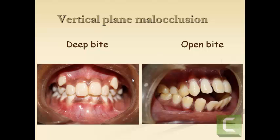Malocclusion may also be present in the vertical plane — that is, either a deep bite or an open bite. Deep bite is said when the bite is more than 2 mm; 2 mm is considered the normal bite. An open bite may be in the anterior region, as seen in the figure, or may also be present in the posterior region.